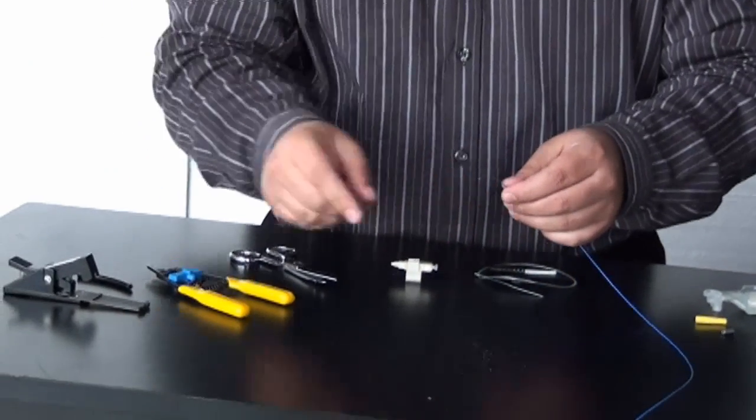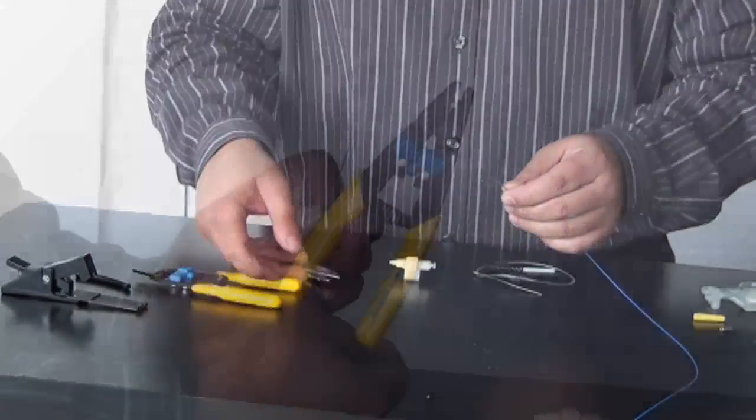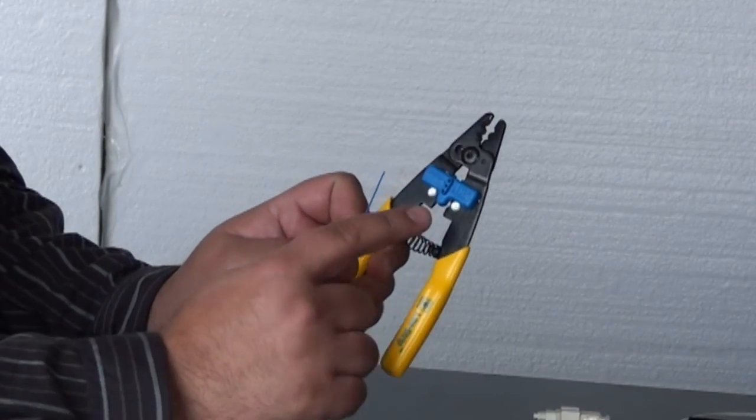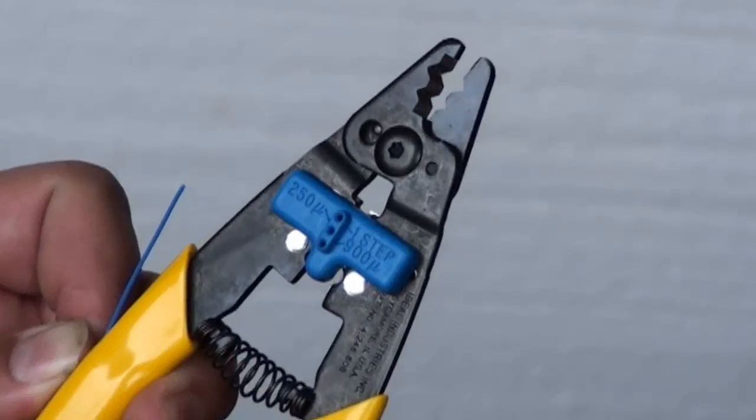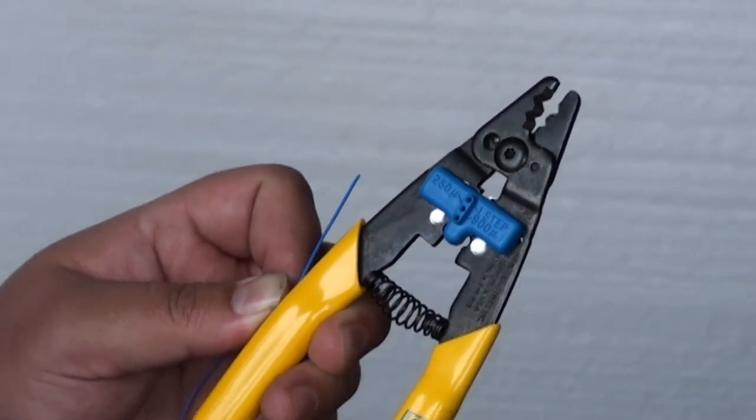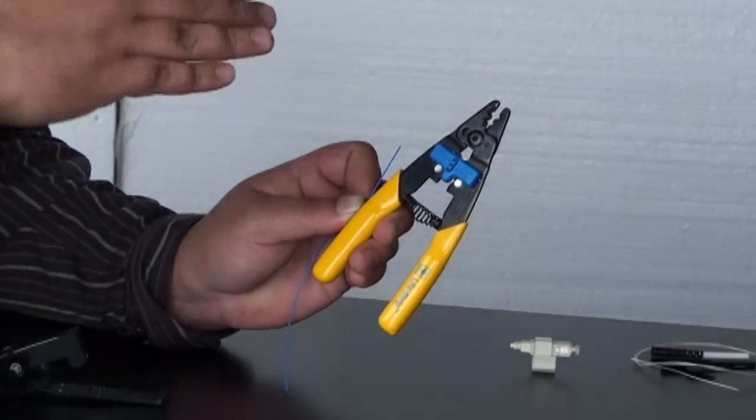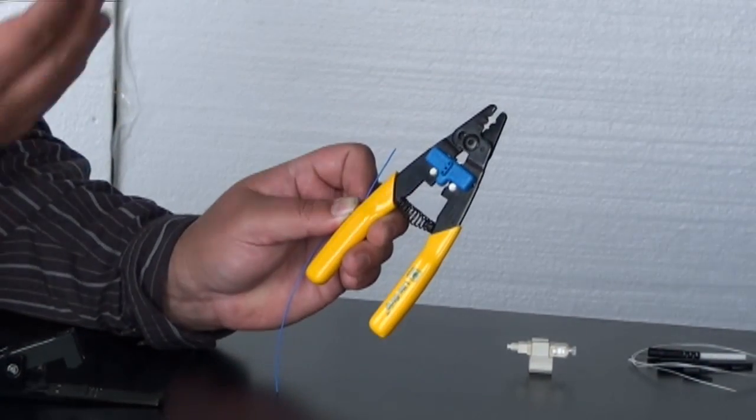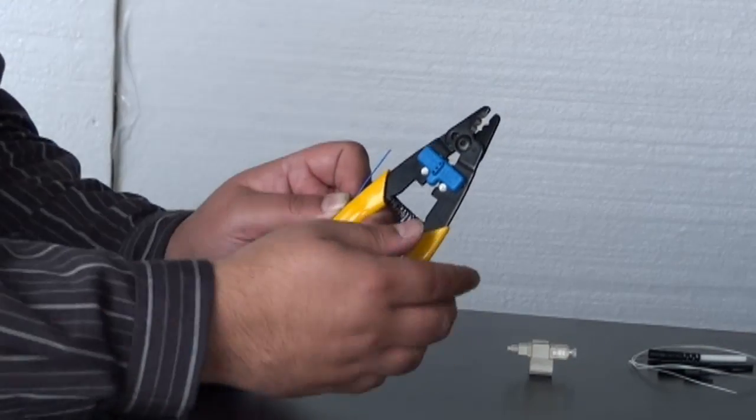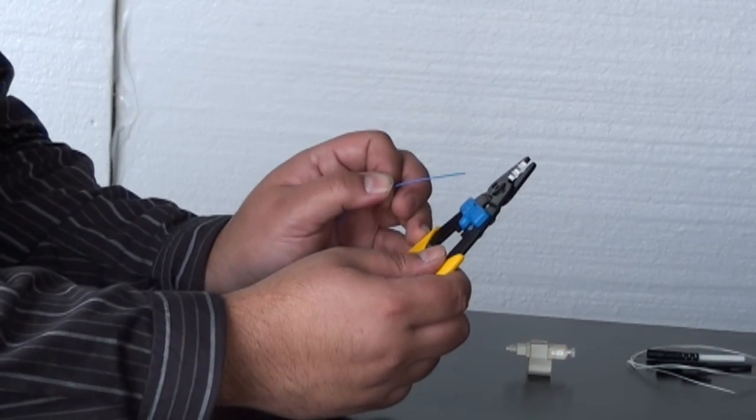Now the next step is to go ahead and strip the jacket off the glass. I'm using an ideal light strip fiber stripper. It's got a few different sizes here for fiber optic cable and it basically covers everything you're going to bump into out in the field. It saves you the cost of buying another tool in the long run for a different size of fiber and then maybe possibly even a third tool down the road. Now we're going to go ahead and put the fiber into the appropriate notch here.